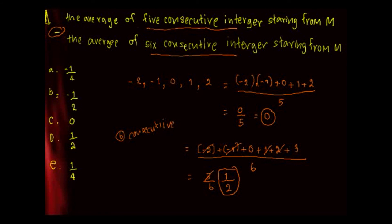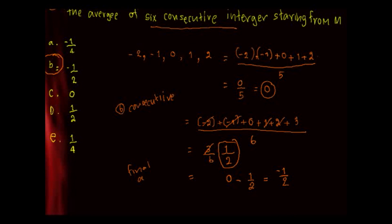Now the question is the average of five consecutive minus six consecutive, so the final answer is going to be 0 minus one-half, which is negative one-half. The answer is B. That's a very easy question, right? Okay, I'll see you next video. Bye.